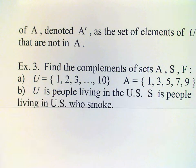Okay, of course we're not restricted to examples involving numbers. Suppose U is the set of people living in the United States and S is the set of people who smoke. Then the complement of S would be those people who don't smoke, right?